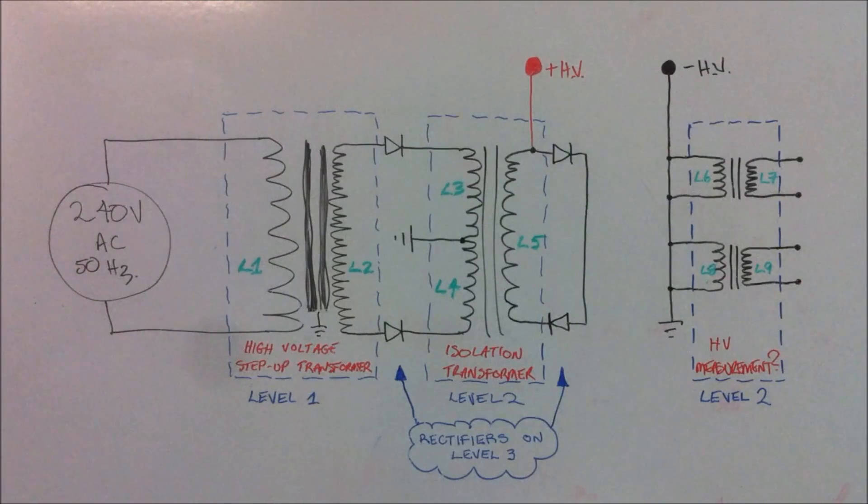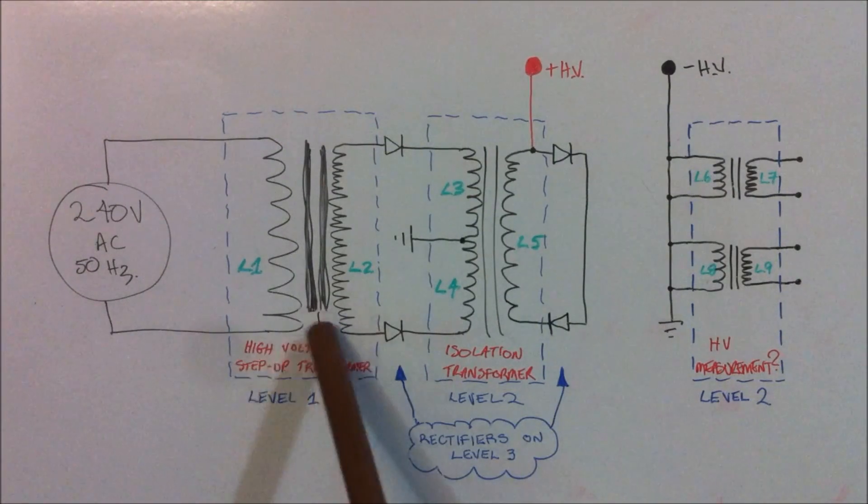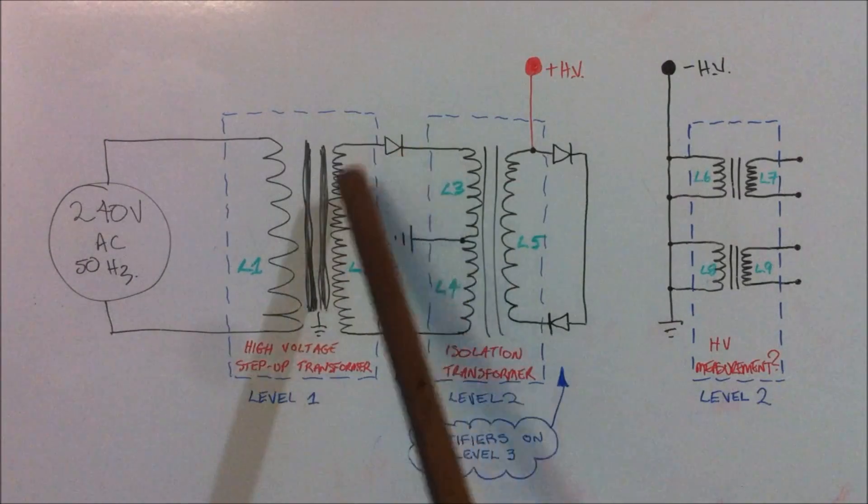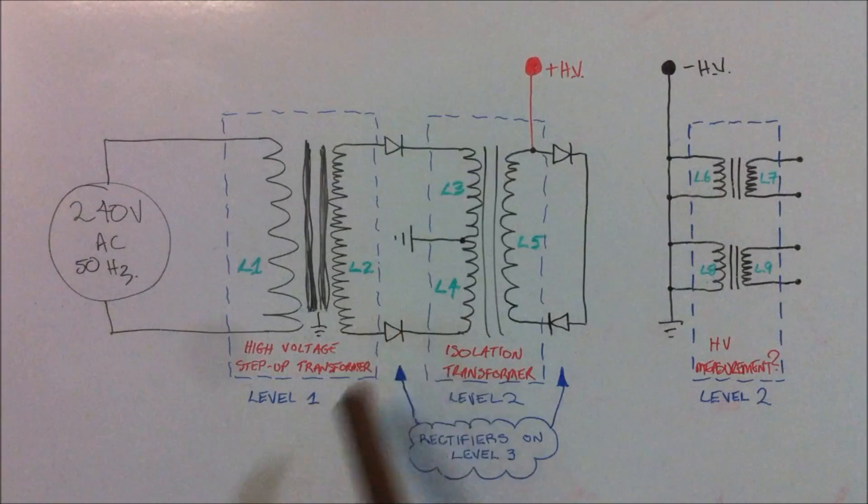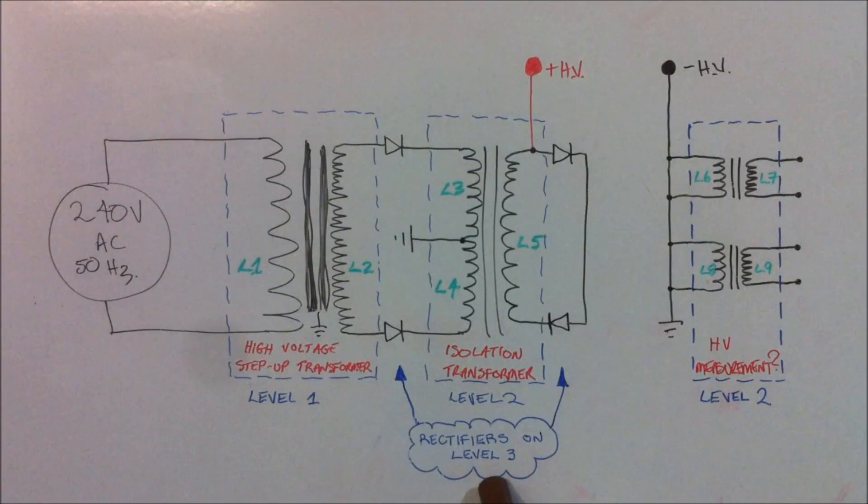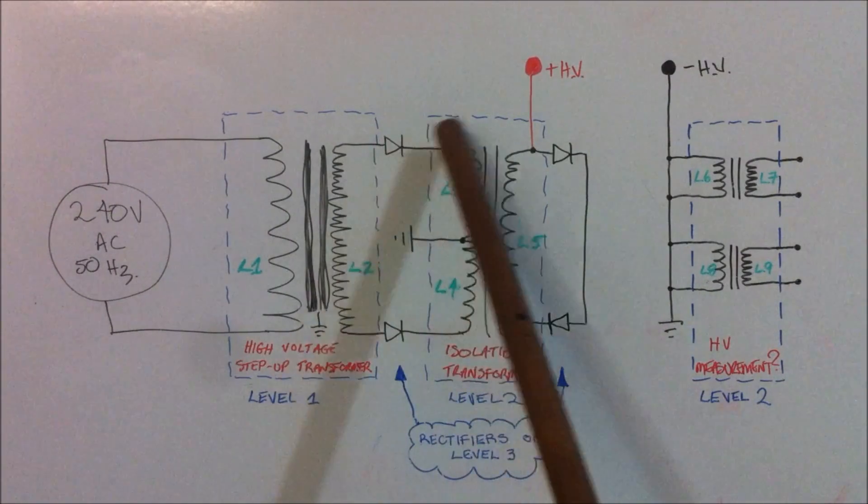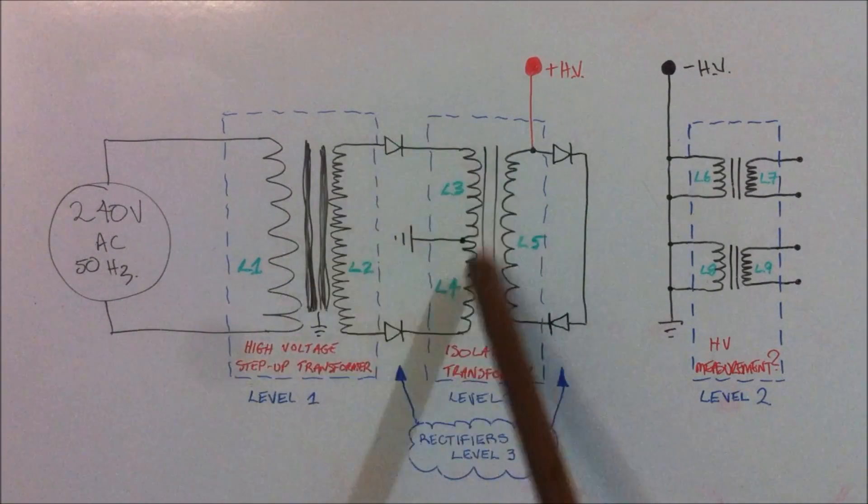We have a grounded core and the output of the L2 coil goes through two of the rectifier diodes which is situated on the top level of the transformer, and the output of that L2 goes straight